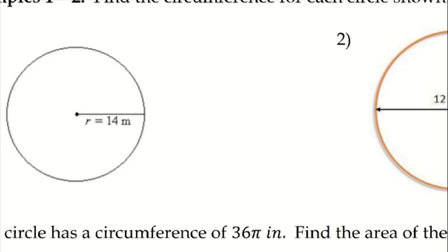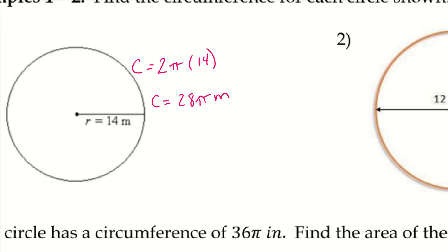It's sort of like if you take a string and put it around a circular figure and then measure how long that string is. We have the radius, so I'm going to do 2π times 14. The circumference C equals 28π meters.